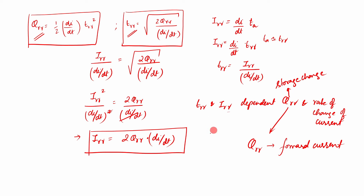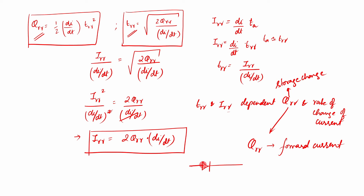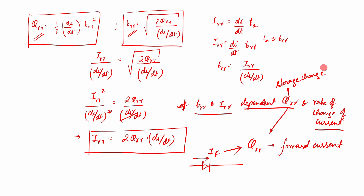Now, on what is QRR dependent? QRR is dependent upon the forward current. When the diode is in the forward bias condition, a forward current flows. The amount of forward current determines how much storage charge — or reverse recovery charge — you are going to get. So TRR and IRR are dependent upon the storage charge and the rate of change of current, and the storage charge is dependent upon the forward current of the diode. These points are sometimes asked in competitive exams.